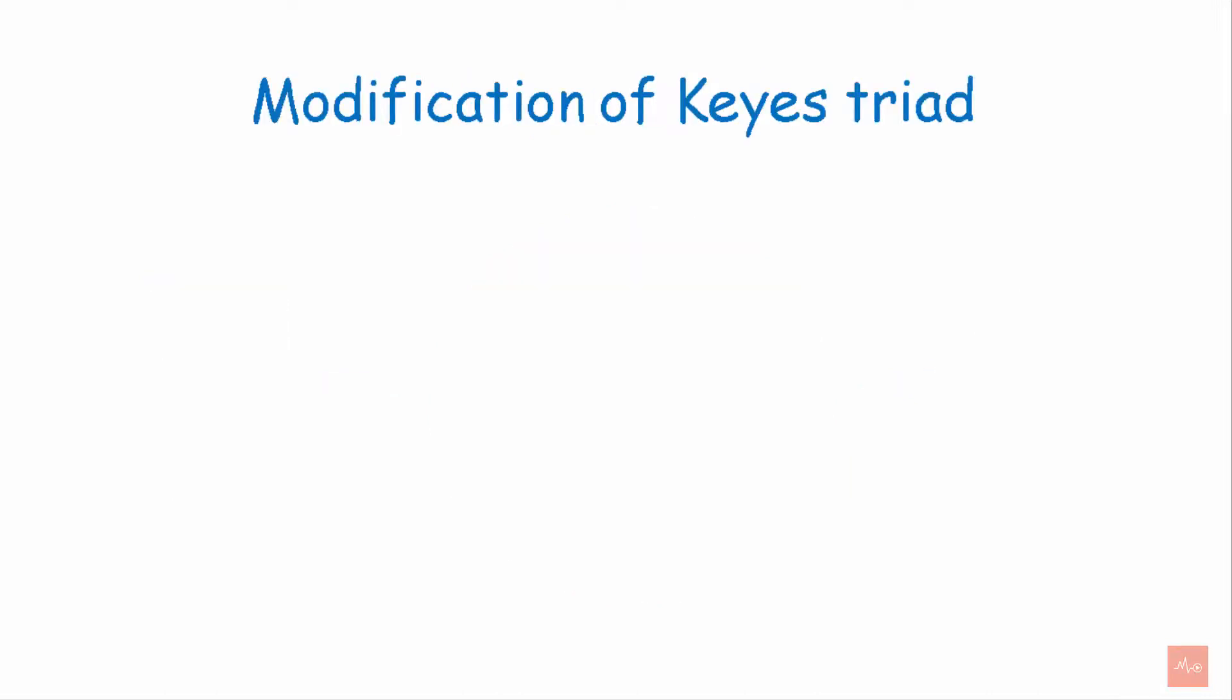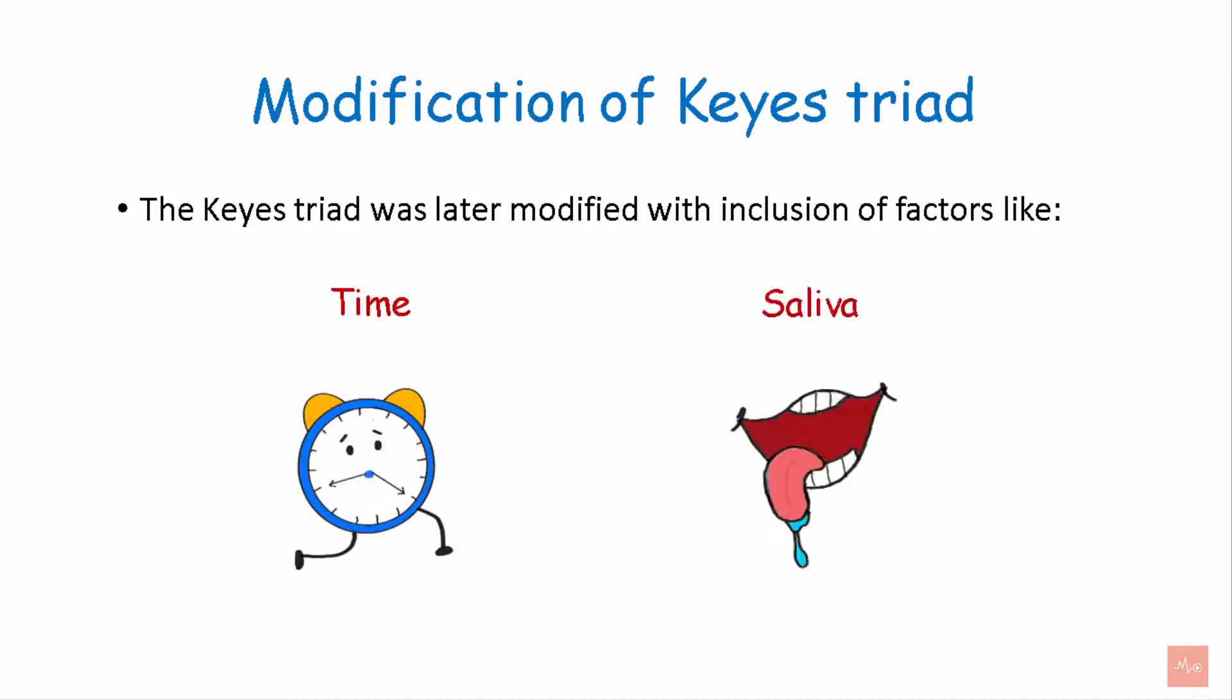The modification of Key's Triad includes two more factors: time and saliva.